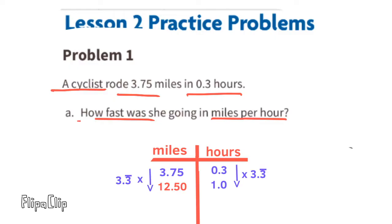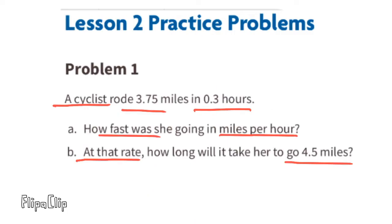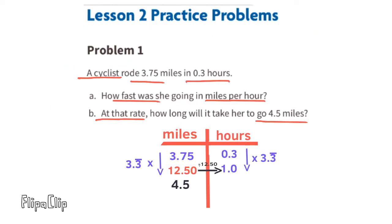Part b: at that rate, how long will it take her to go 4.5 miles? 12.5 divided by 12.5 equals one. 4.5 divided by 12.5 equals 36 hundredths. And 36 hundredths of an hour, or 36 hundredths of 60 minutes, is 21.6 minutes. At that rate, it would take her a little longer than 21 and a half minutes to ride 4.5 miles.